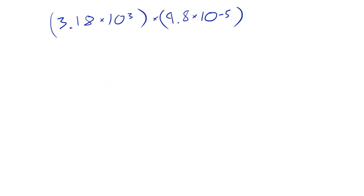In this last example, I have a positive exponent and we're going to multiply it by a scientific notation number with a negative exponent. So in order to do that, again, the same rules still apply. We're going to grab 3.18 and we're going to times it by 9.8. And we're going to take that number and times it by 10 to the third times 10 to the negative 5.